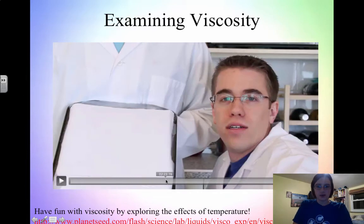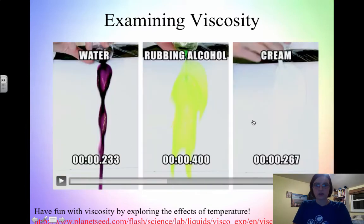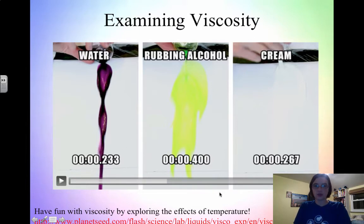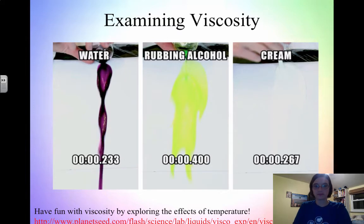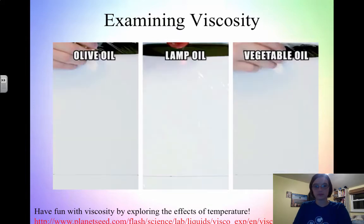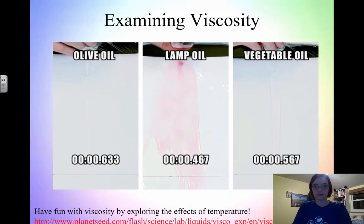So water flowed the fastest and has the lowest viscosity. Rubbing alcohol finished last, so it actually has the highest viscosity out of those three. In the second heat of the race, we're racing olive oil, lamp oil, and vegetable oil. Lamp oil finished first with a time of 0.467 seconds, and olive oil finished last with a time of 0.633 seconds.